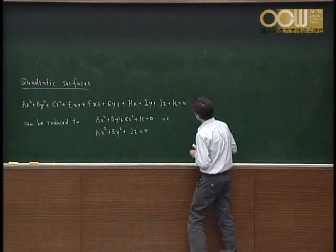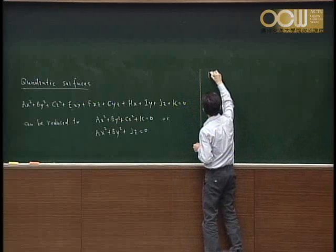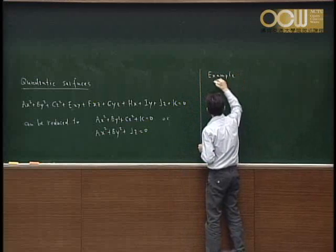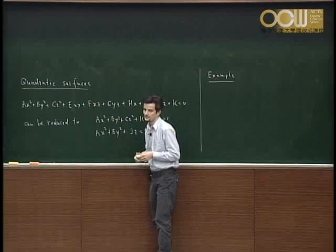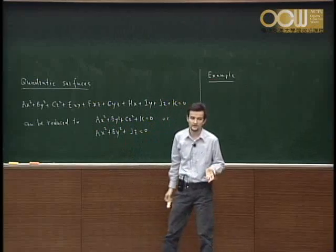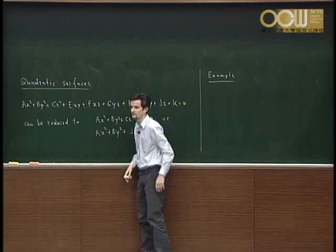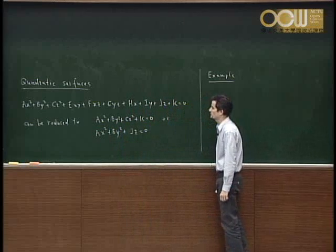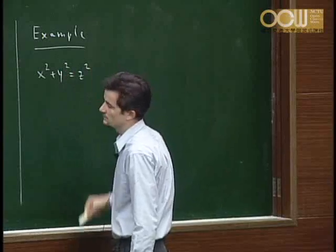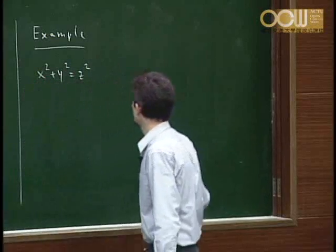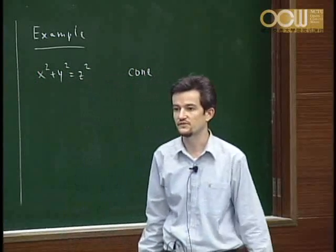The first type is where k equals zero. Of course, a, b, and c cannot all be positive because then you would have no x, y, z satisfying the equation. So the first possible type gives you something like this here, and this type is called the cone.